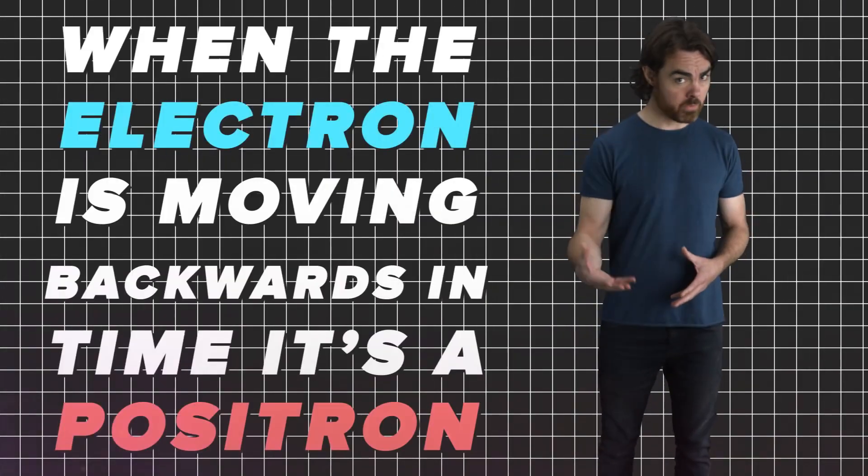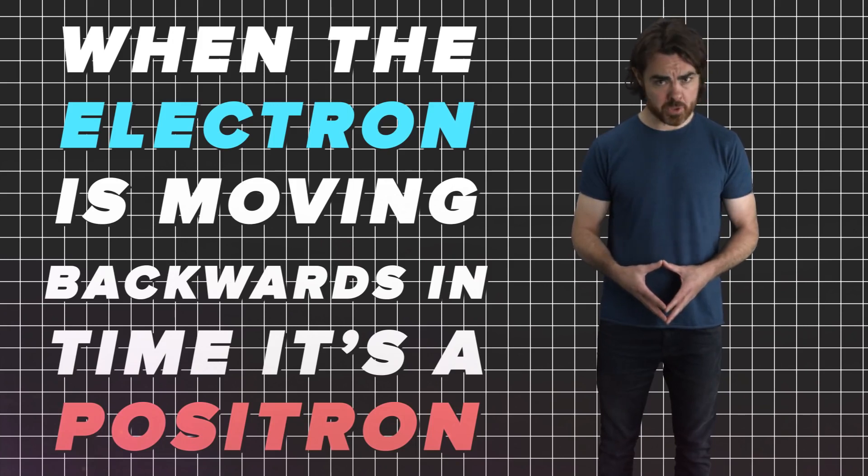When the electron is moving backwards in time, it's a positron, the antimatter counterpart of the electron.